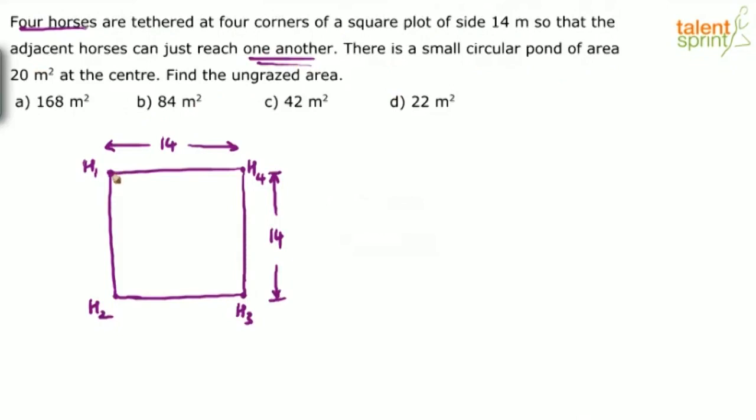Now you know that when horses are tied or tethered at a corner, the rope there will act like a radius for a quarter of a circle. Basically we can now conclude that because it says the adjacent horses can just reach each other, we can say that the length of the ropes with which the horses are tied is seven meters. So what happens when the horse can cover this much area? It can graze this area and this is like a quarter of a circle. The radius is seven meters.